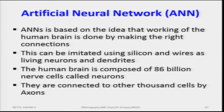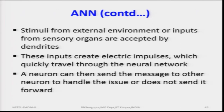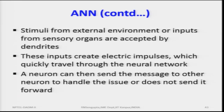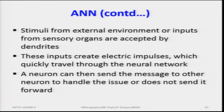Neurons are connected to other thousand cells by axons and information is passed through pulses or electrical connections. Stimuli from the external environment or inputs from sensory organs are accepted by the dendrites and processed — suddenly we feel pain and immediately remove our hand, reacting to coldness, heat, or pain. These inputs create electrical impulses which quickly travel through the neural network to the brain, and the brain decides what to do — whether to remove the hand or not. If the response is very slow, obviously the nervous system is not working properly.